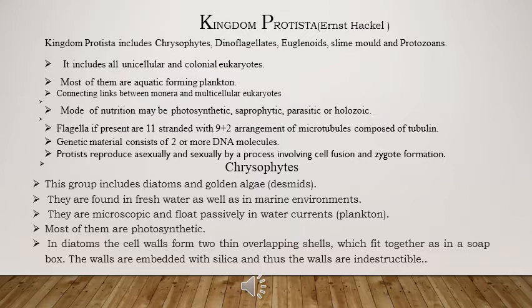Protista reproduce asexually by binary fission, multiple fission, or budding, whereas sexually by the process of cell fusion and zygote formation.